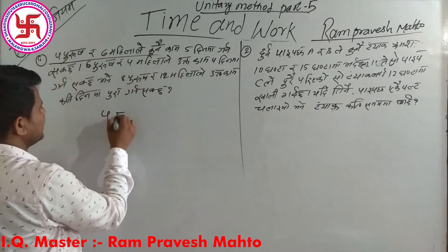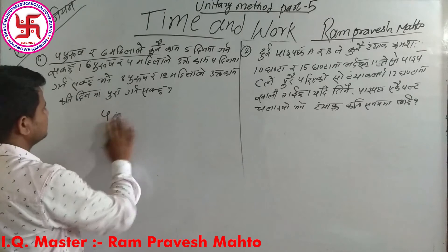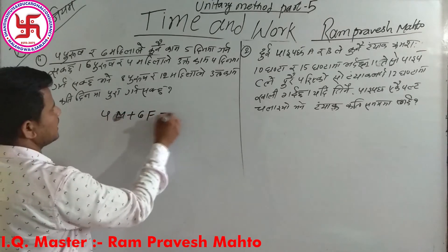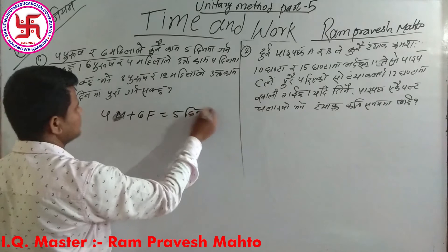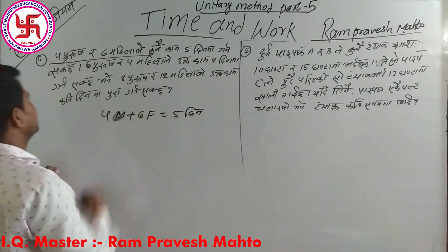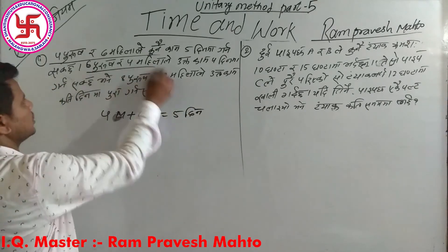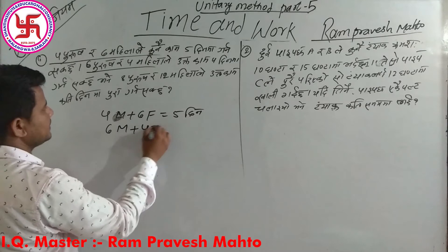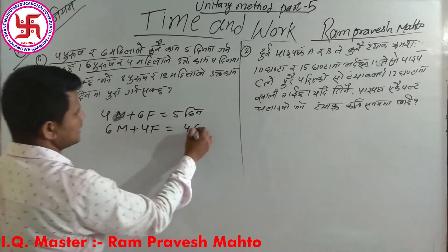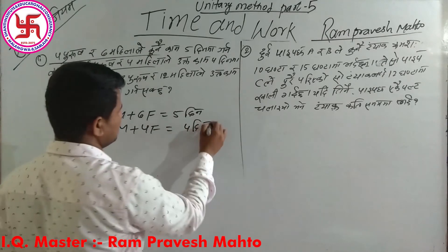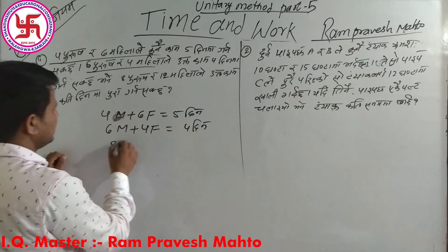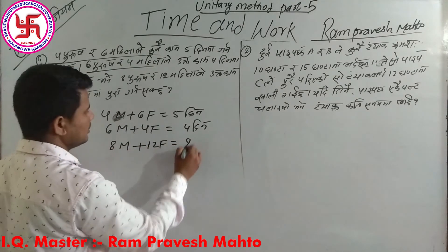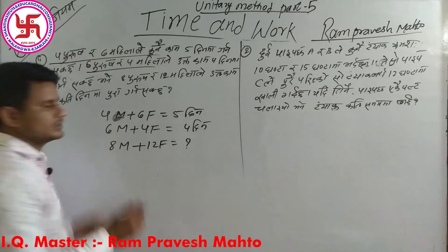4 male plus 6 female equals 5 dill laakha. This time, 6 male plus 4 female equals 4 dill laakha. 3, 4 male, star male, equals 5 dill laakha.